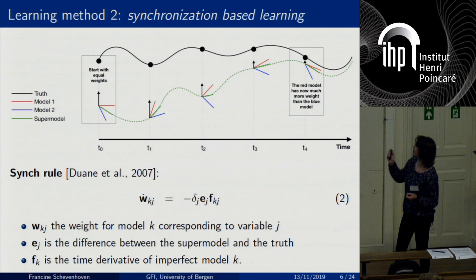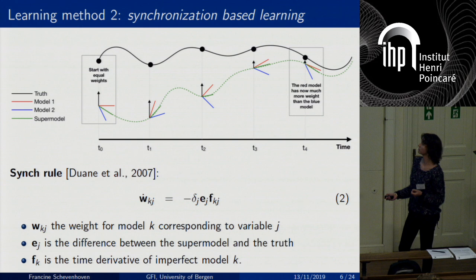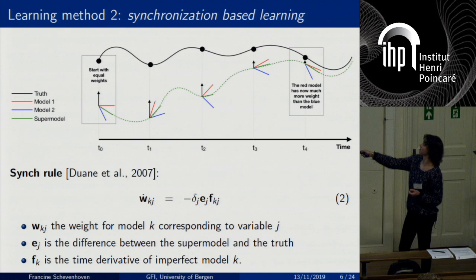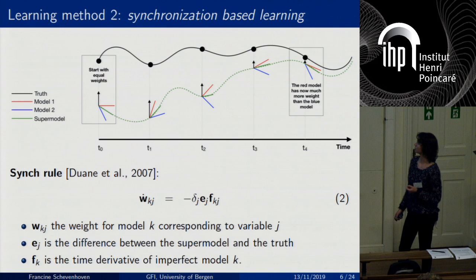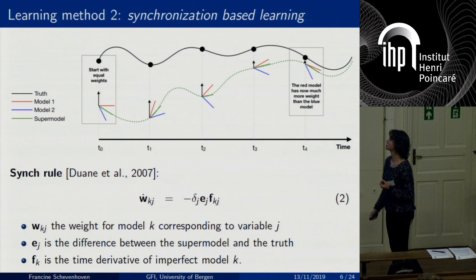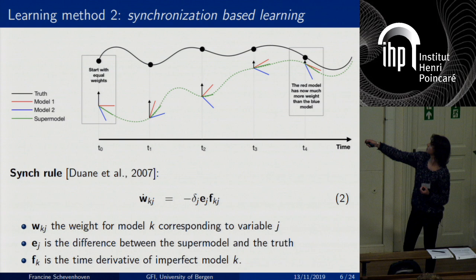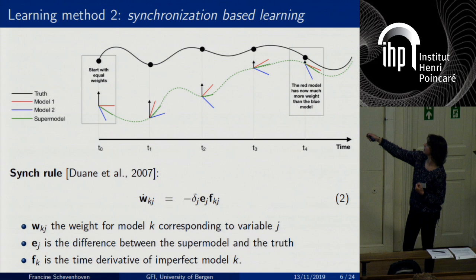I also use a synchronization-based learning rule, originally developed by Greg Dwayne. It's a product of the error between the supermodel and the truth and the time derivative of an imperfect model, originally developed for parameter estimation. The key difference from CPT is that with this method you update the weights during training. You start with equal weights for model one (red line) and model two (blue line). Then during training, you update the weights such that the supermodel (green line) synchronizes with the truth (black line). After some time, the red model has gotten much more weight than the blue model.